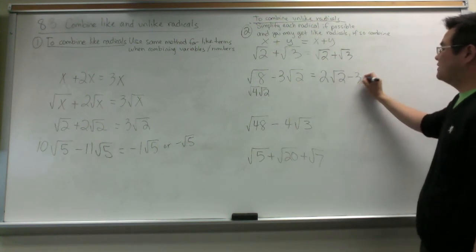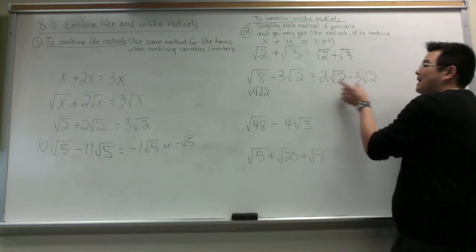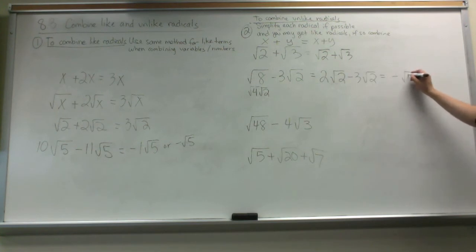And then I bring the rest of the problem over minus 3 root 2. So now root 8 turns into root 2. Now I have like terms. I can combine the expression. 2 root 2 minus 3 root 2 is negative root 2.